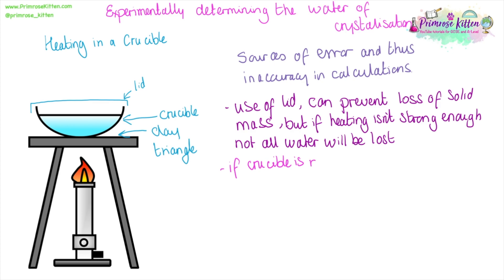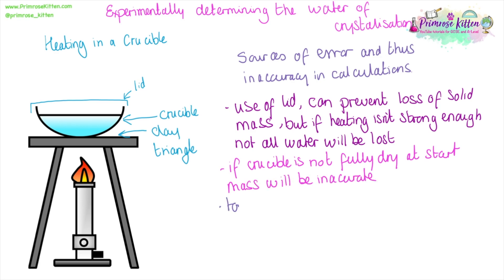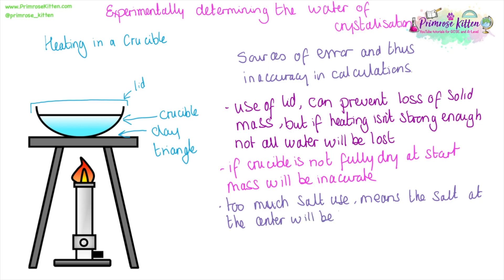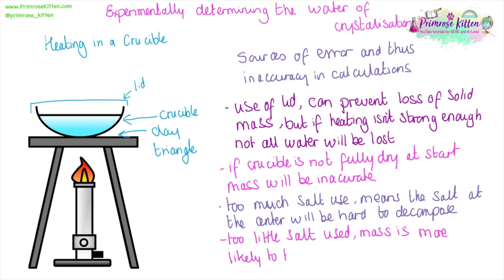If the crucible isn't fully dry at the beginning, then you are adding in more water — more weight than is actually lost from the hydrated form of the salt — so the difference in mass will be affected and that will affect your calculations. If too much salt is put in, it's going to be really hard for the salt in the middle to properly turn into the anhydrous form because the water won't be able to evaporate. Alternatively, if too little salt is used, you won't notice the difference in mass and that will make your calculations really hard.